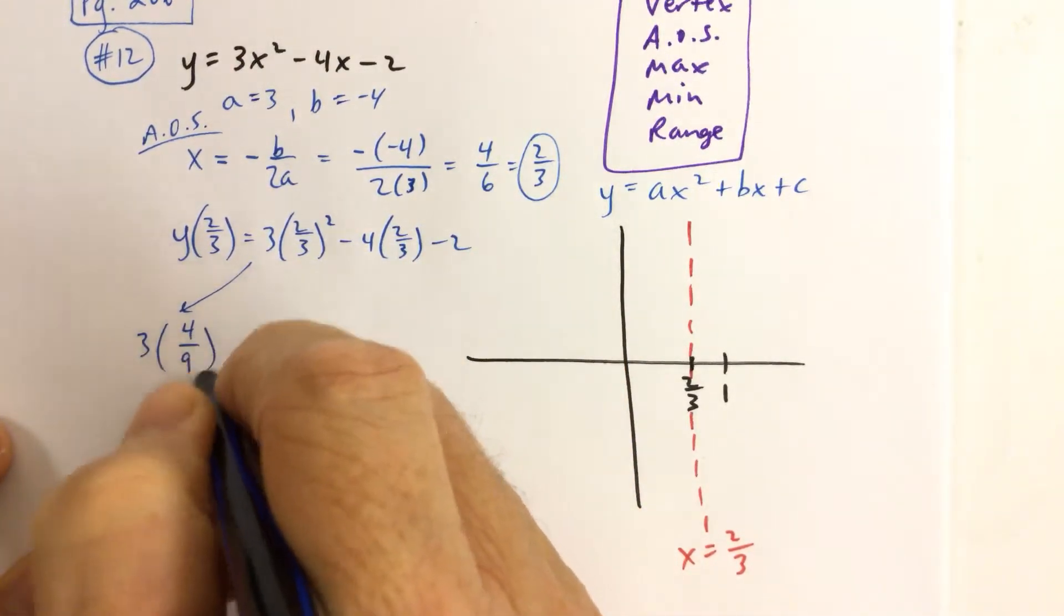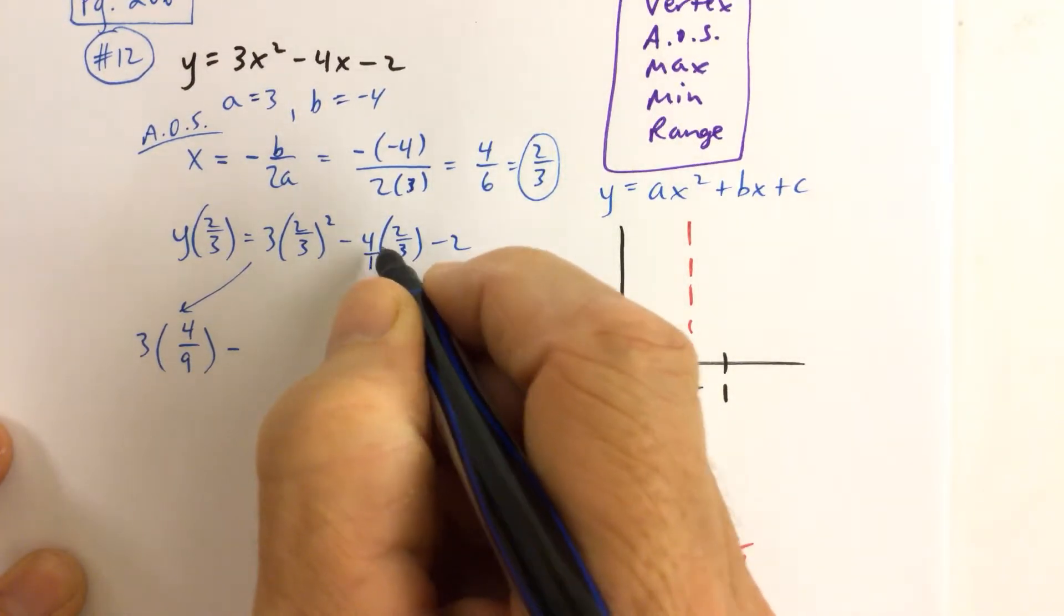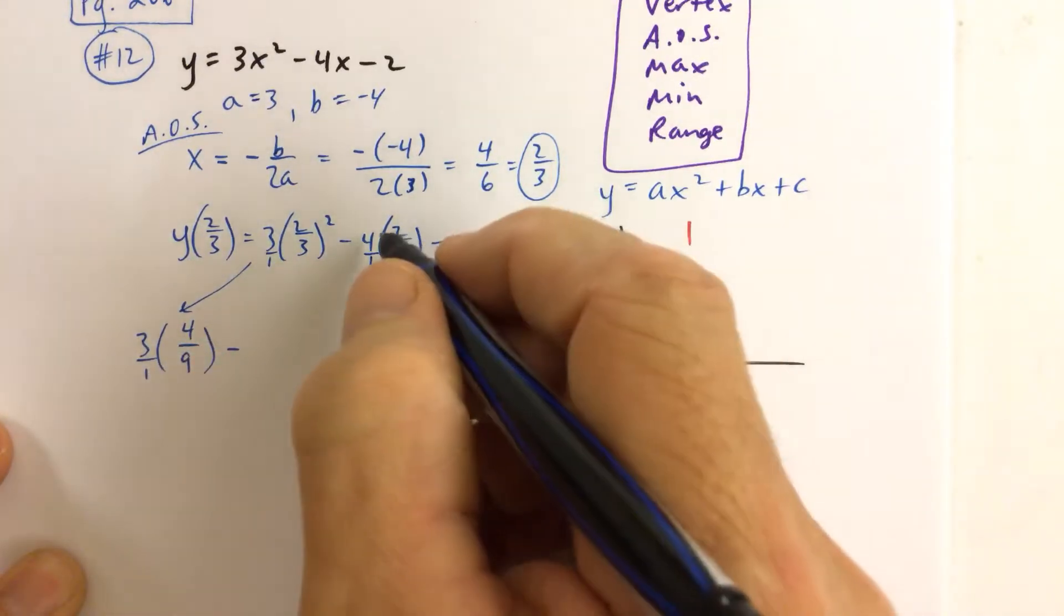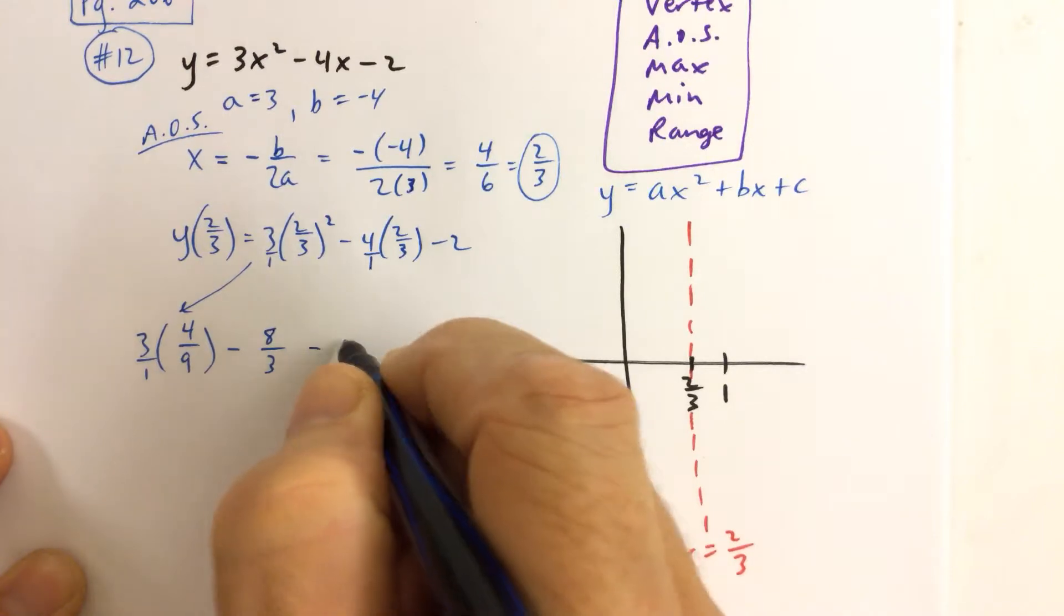So we have 4 ninths minus 4 times 2 thirds. That's 4 over 1 times 2 over 3. Same with this one over here, 3 over 1.